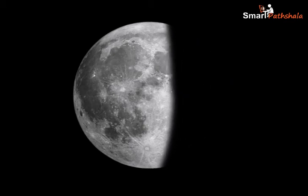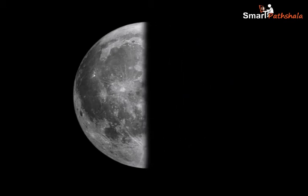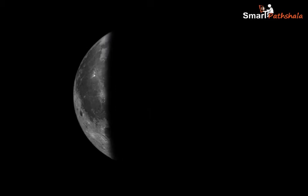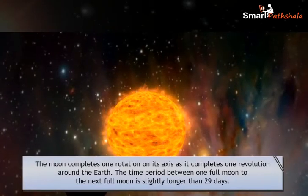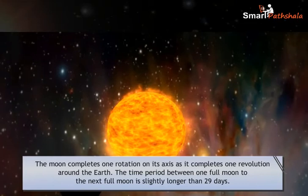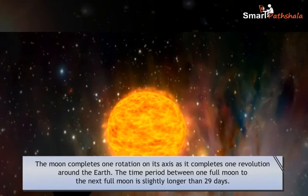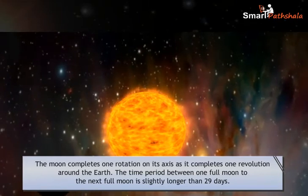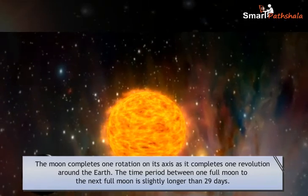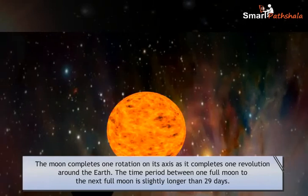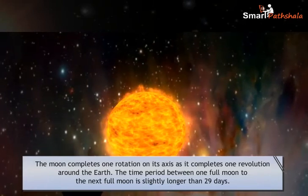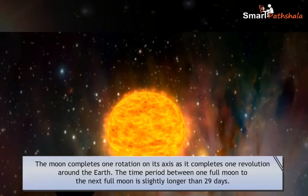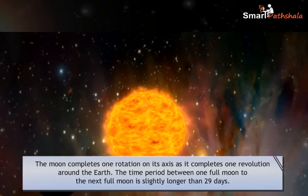the part of the moon visible from the earth decreases in size every day. The moon completes one rotation on its axis as it completes one revolution around the earth. The time period between one full moon to the next full moon is slightly longer than 29 days.